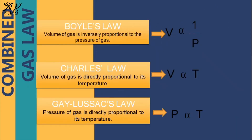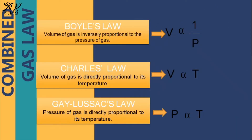The equations can be expressed as follows. For Boyle's Law, volume is directly proportional to 1 over P. For Charles' Law, volume is directly proportional to temperature. And for Gay-Lussac's Law, pressure is directly proportional to temperature.